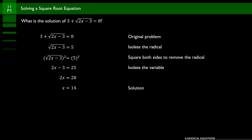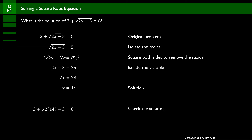Now we want to check whether 14 is correct — just plug it back in for x and use order of operations. Start underneath the radical: 2 times 14 is 28, minus 3 is 25. The square root of 25 is 5, plus 3 is 8. So 8 equals 8, confirming we have the correct solution.